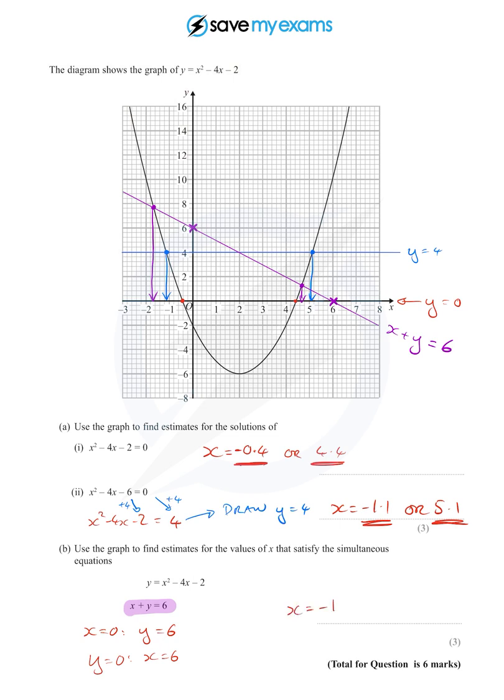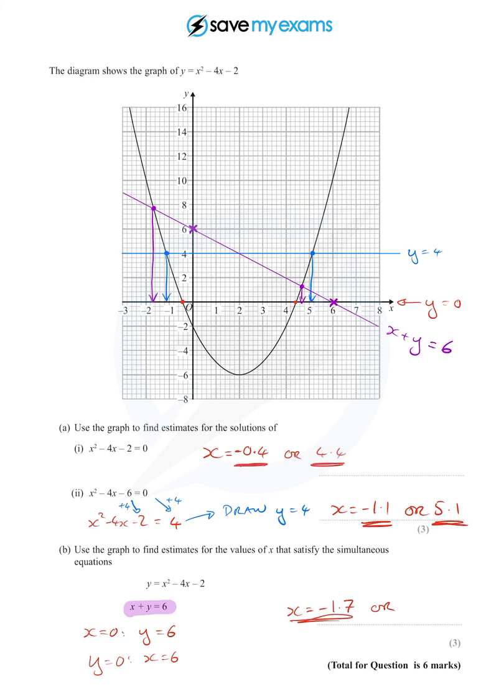And I can see I've got about x equals minus one point, it's about three and a half squares, so that's minus 1.7. Or, and the other one is, well it's about three and a half squares above four, isn't it? So that'll be about 4.7. They will of course give you a little bit of leeway because you're drawing on a graph. Okay, that's not easy, but have a look at the video again and I'm sure you'll get it.